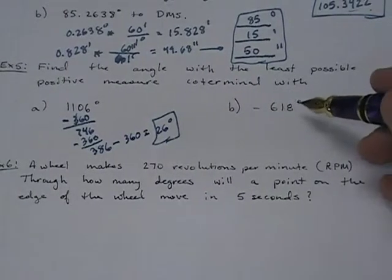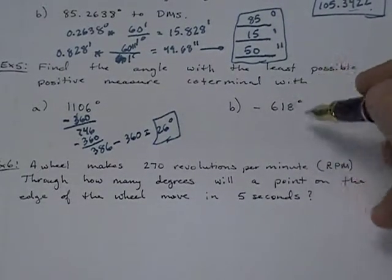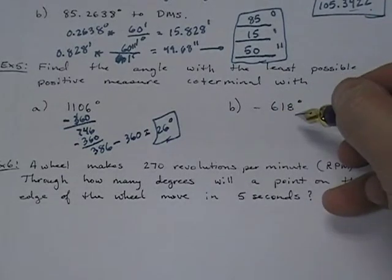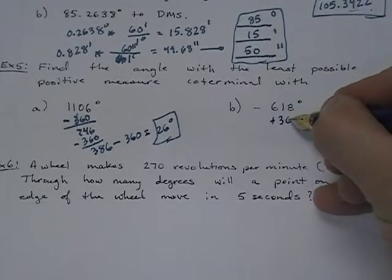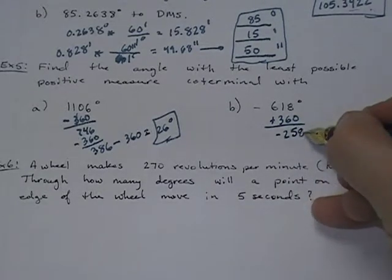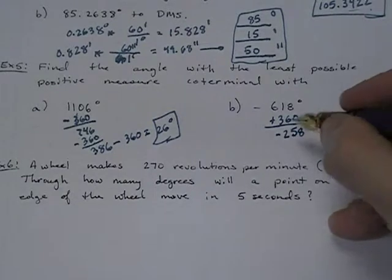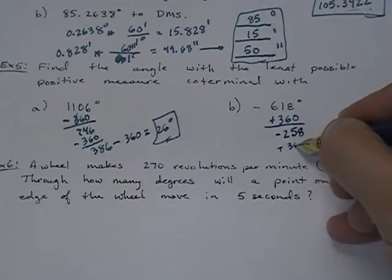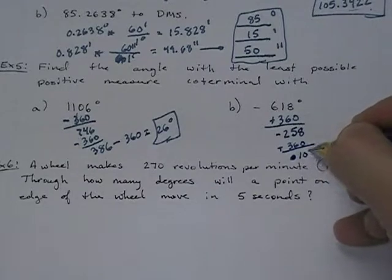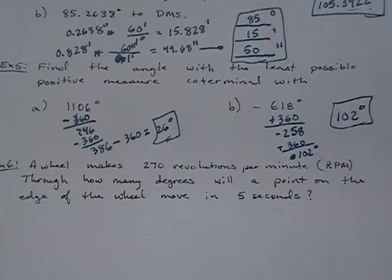Part B: same thing with negative 618 — find the co-terminal angle with the least positive measure. Since it's a negative number, instead of subtracting 360 I'm going to add 360. Negative 618 plus 360 is negative 258. Add another 360 and I get 102. So the answer for the second one is 102 degrees.